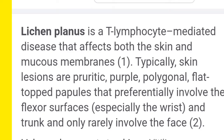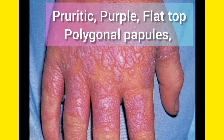The four P words are very important for Lichen Planus. Number one: Pruritic — meaning itchy. Number two: Purple — they have a purple color. Number three: Polygonal — that means many-sided. Number four: flat-topped Papules. These are generally found on the flexor surface of the hand.